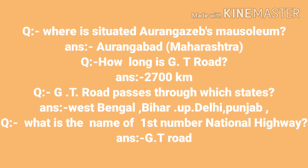GT Road passes through which states? West Bengal, Bihar, Uttar Pradesh, Delhi, and Punjab. What is the name of the first National Highway, the GT Road? Its full form is Grand Trunk Road.